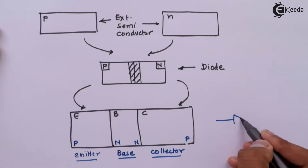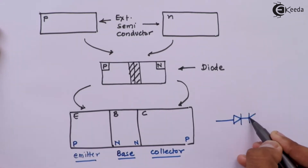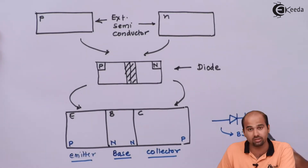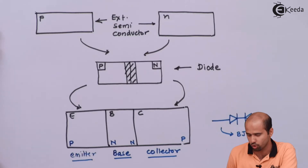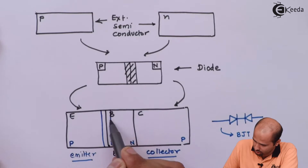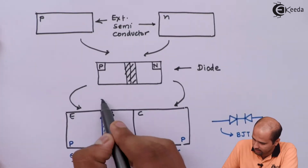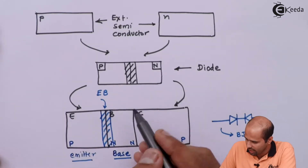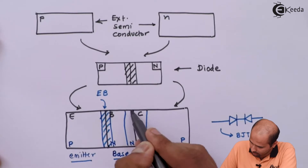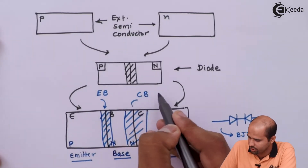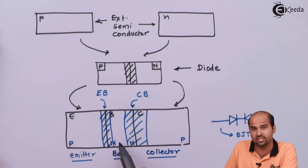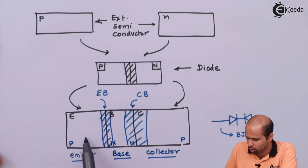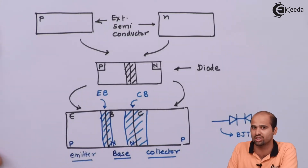Symbolically, two diodes back to back give you the BJT. We will separately learn the symbolic representation. This junction between emitter and base is called the EB junction. With that junction, minority and majority charge carriers in the N region and P region are entirely different, and both majority charge carriers are responsible for the process of conduction. That's why the word is bipolar.